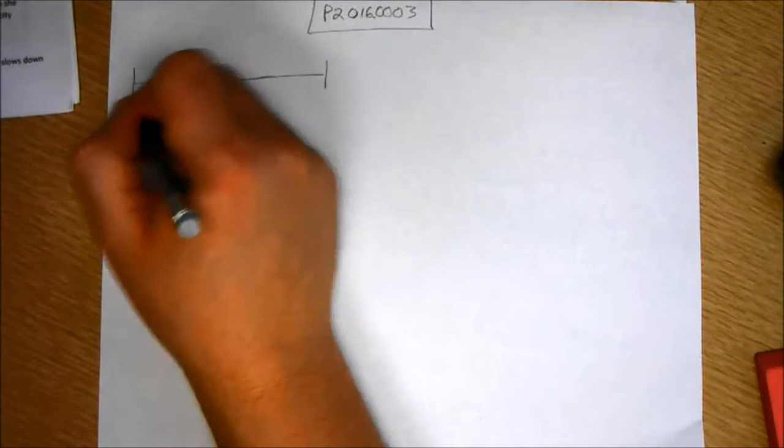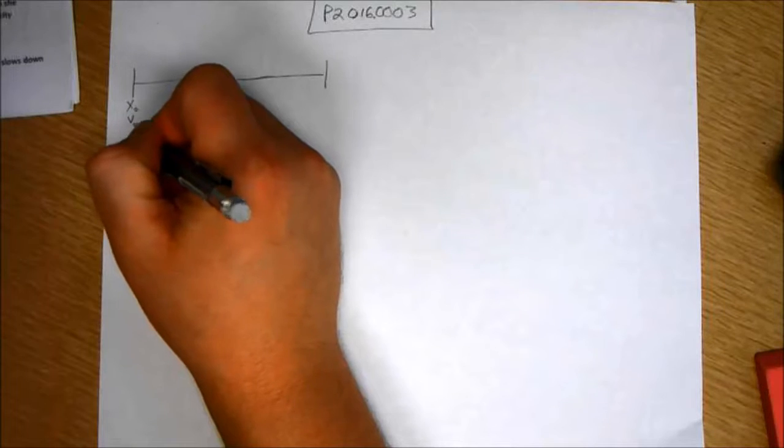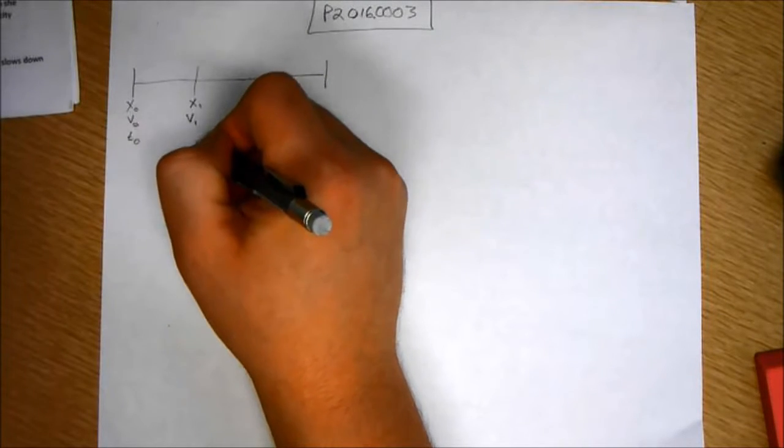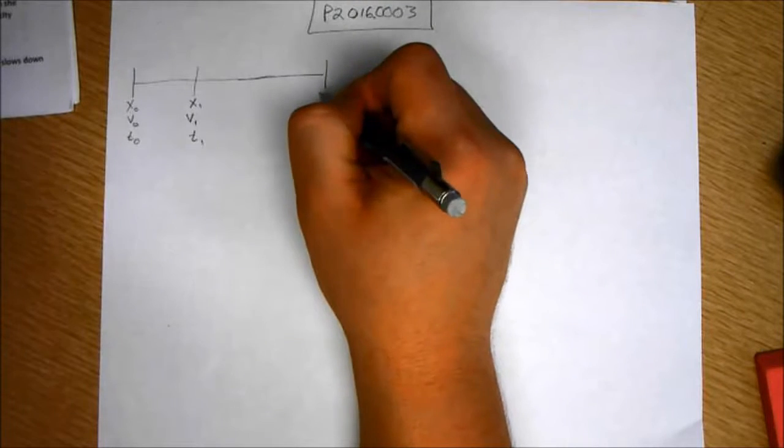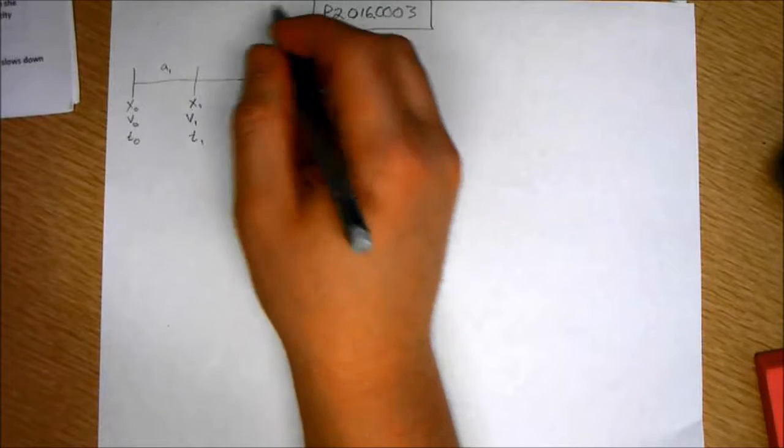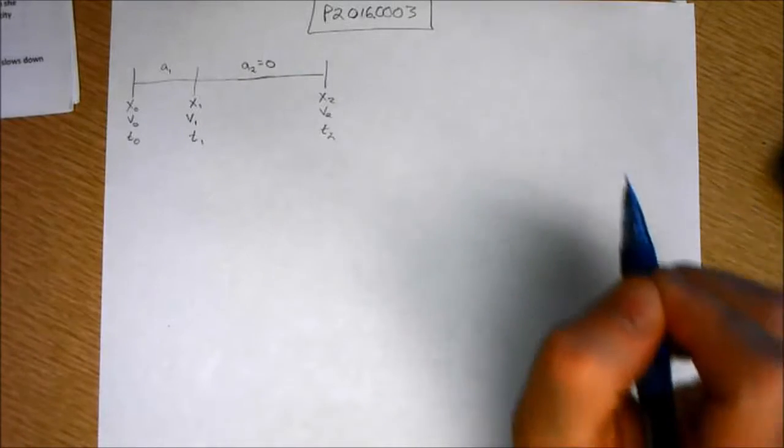I'm going to put my variables, define my variables: x0, v0, t0, x1, v1, t1, x2, v2, t2, and we know there's an acceleration here and a2 equals zero. So there's no acceleration there.